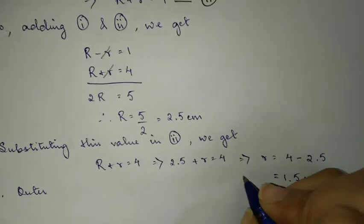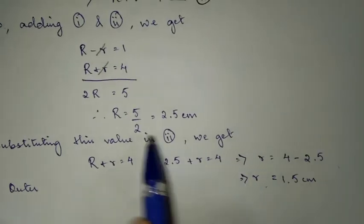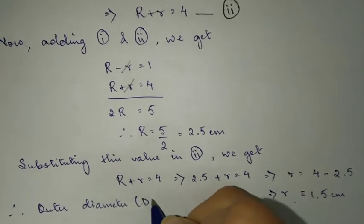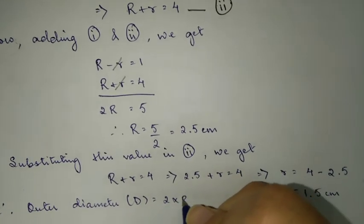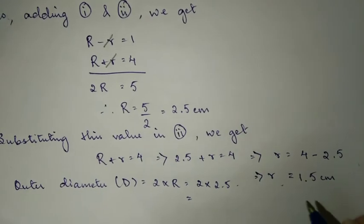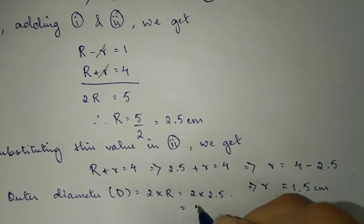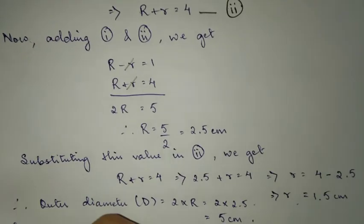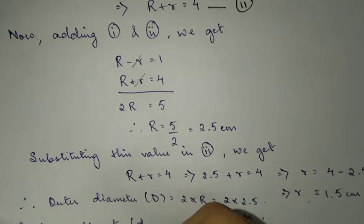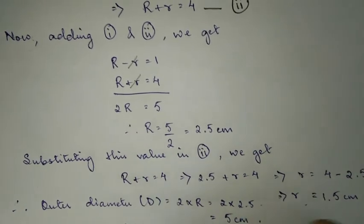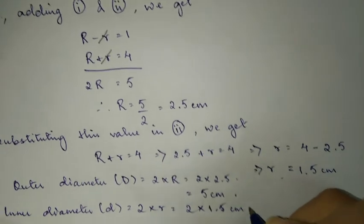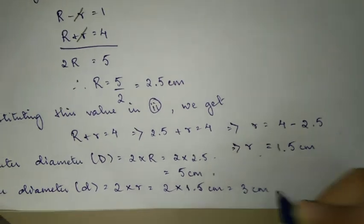Therefore, the outer diameter capital D equals 2 into capital R, which is 2 into 2.5, which will give you 5 cm. Similarly, inner diameter small d equals 2 into small r, which equals 2 into 1.5, which equals 3 cm. So this is the final answer.